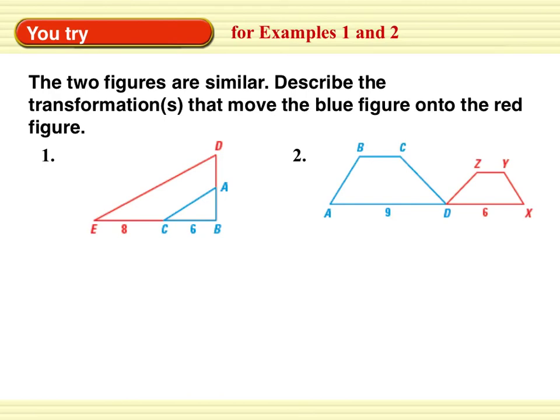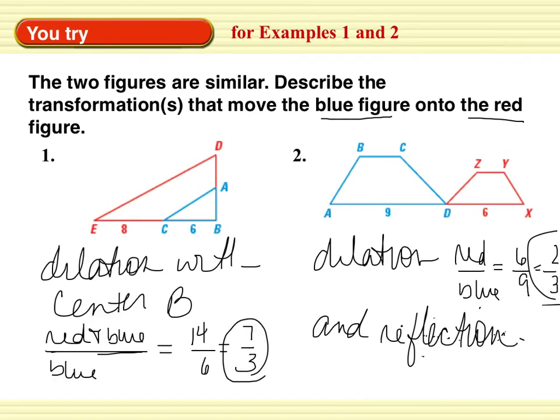Two you tries. The two figures are similar. Describe the transformations that move the blue figure onto the red figure. The blue figure onto the red figure. Push pause and try it on your own. With number one, we have a dilation with a center B. So blue to red. That means it starts blue and it goes to red. Describe the transformations. The scale factor, which we need to describe this dilation, is, we went blue to red. So the blue is on the bottom and the whole thing, the red plus blue is on top. So blue to red. We get 14 over 6, which simplifies to 7 over 3.